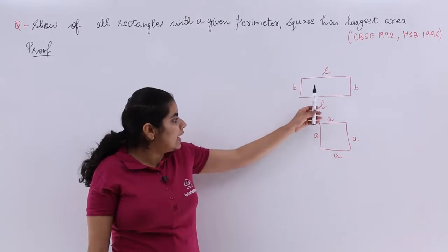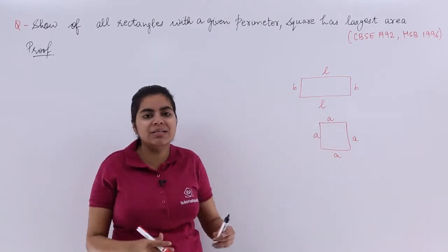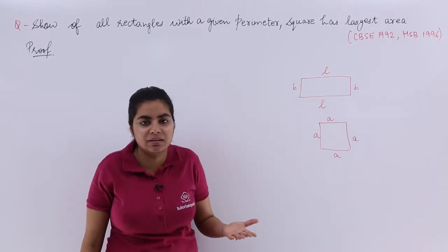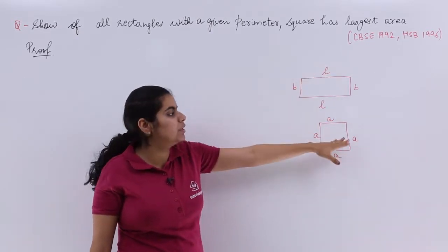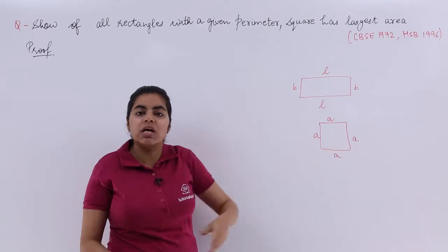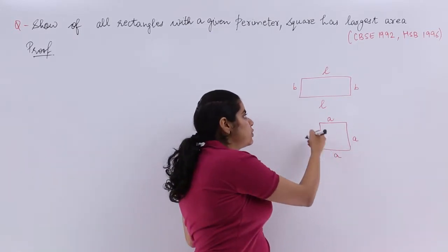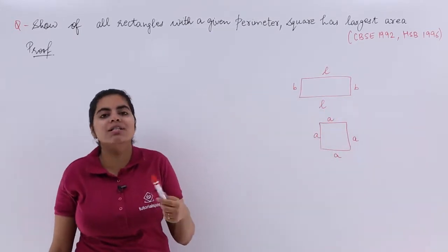Now, rectangle and square have much similarity in that the opposite sides are parallel. But the difference is that here only opposite sides are equal in the rectangle, but here all sides are equal. So square is a special case of rectangle with all sides equal.